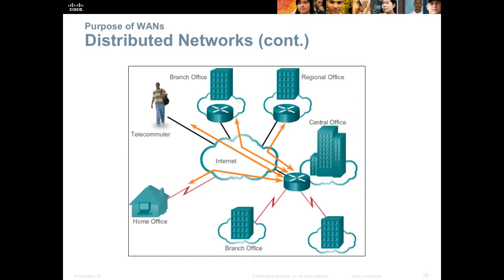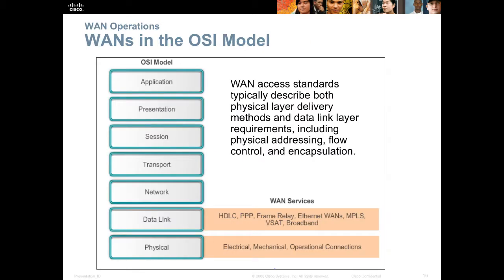Here's a look at a distributed network, where the internet is being used as the interconnect for all the different locations. Typically, WANs operate at the bottom two layers of the OSI model — that would be the physical and the data link layer. You'd be looking at protocols like HDLC, PPP, frame relay, sometimes even Ethernet. MPLS is one of the new exciting protocols being offered in large cities around the world today. At the physical layer, we have various optical carrier signals, some copper wire technologies, and more and more wireless solutions.